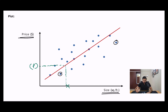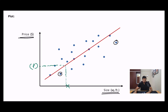We considered only one independent variable, but there can be multiple independent variables. When you have multiple independent variables — like size, bedroom number, or number of floors — what will happen is this single line will actually become a plane. So that is the only change: it becomes a plane, and you have to find out the best-fit linear plane that fits your data points.